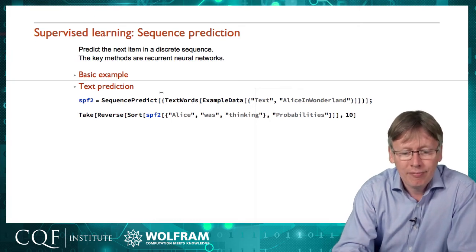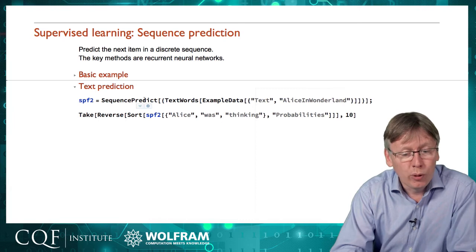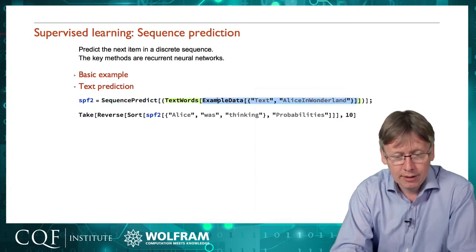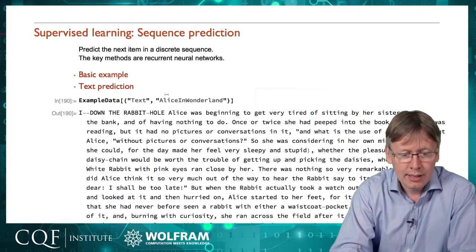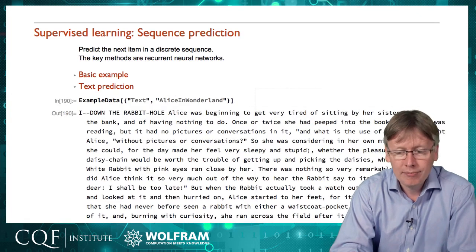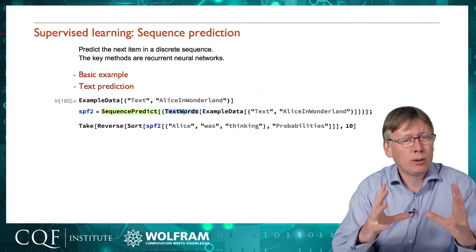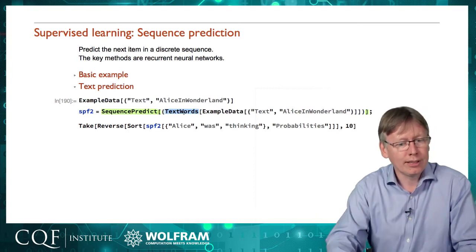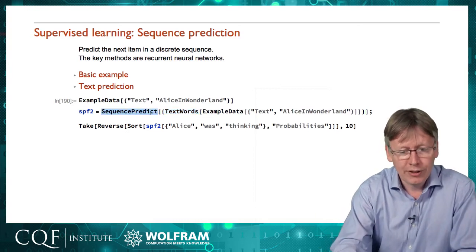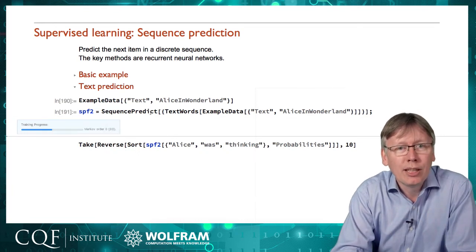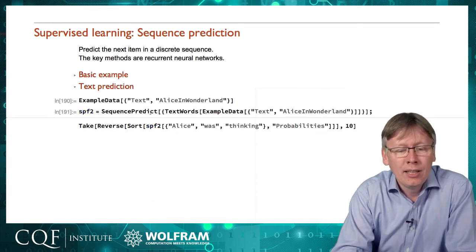Doing it is pretty straightforward — it's exactly the same as we've done before. I'm going to take some example data. Let's have a quick look at that data: it's the text of Alice in Wonderland. I'm going to take that book text and turn it into a list of words, because we don't want to treat it as one string — we want to treat it as a sequence of one-word strings. Then we'll hit it with the sequence predict function, which will take all those words and start figuring out the patterns of what word typically follows what.